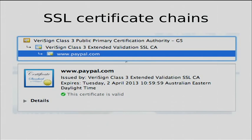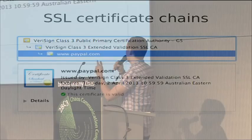This is about the CVE 2011-0228 vulnerability, which was announced in June or July. Just a very brief intro to what the vulnerability is about: you have SSL certificates and SSL certificate chains. Here we have an example of a normal certificate for PayPal, issued by the Verisign CA. There's an intermediate Verisign certificate which has signed the PayPal certificate.